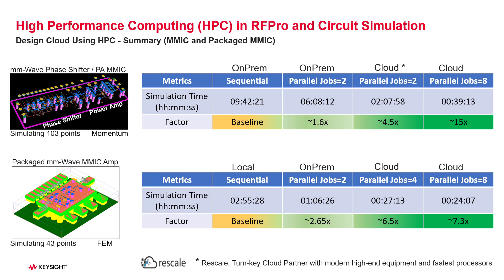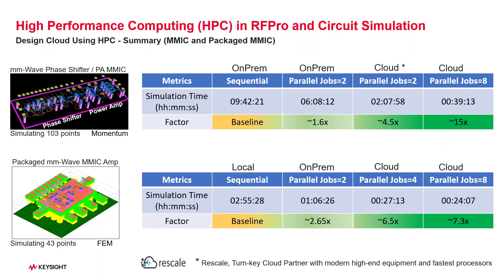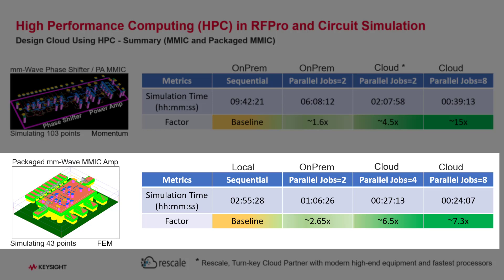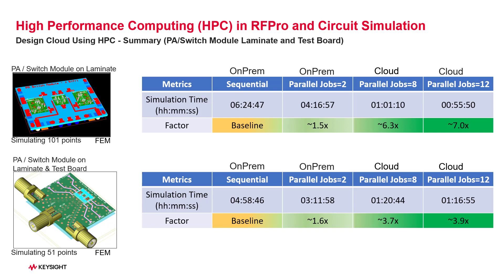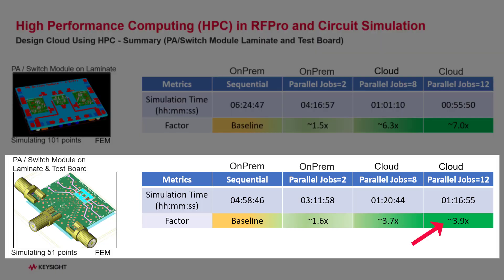Let me share my benchmark results on the five cases. I was able to obtain a 15 times speedup on the phase shifter PA MIMIC, simulating 103 frequency points using Momentum simulation. On the packaged MIMIC example, I achieved a 7.3 times speedup with 43 frequency points simulated with FEM. I got 7 times speedup on the PA switch module with 101 frequency points using FEM. And I got 3.9 times speedup on the whole module on a test board with connectors, with 51 frequency points.